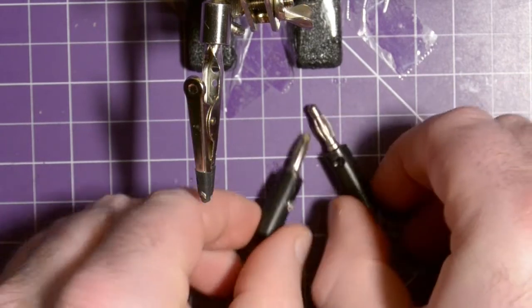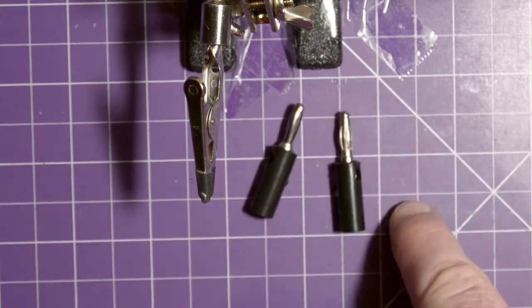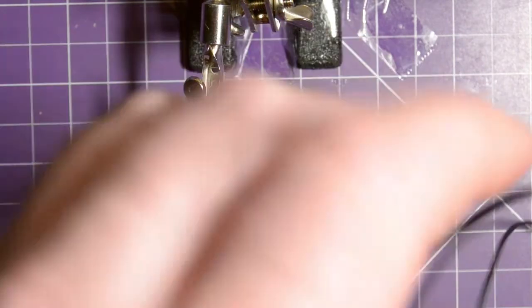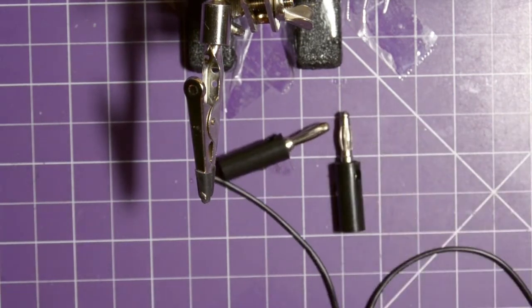So all you need really is some 4mm banana plugs, a little bit of wire, these pin headers, some heat shrink and a soldering iron.